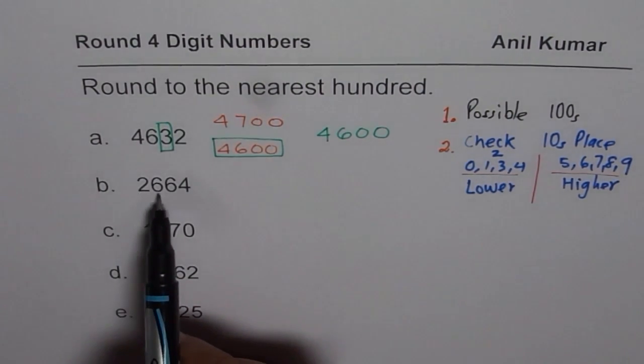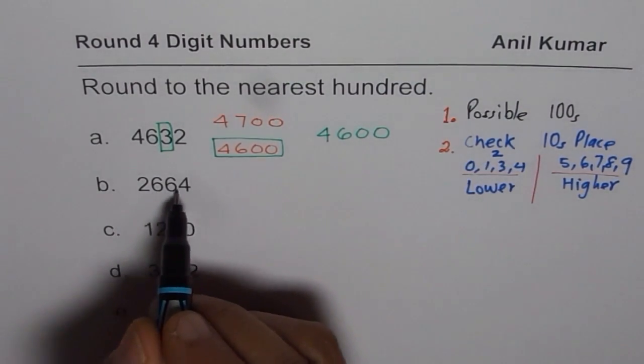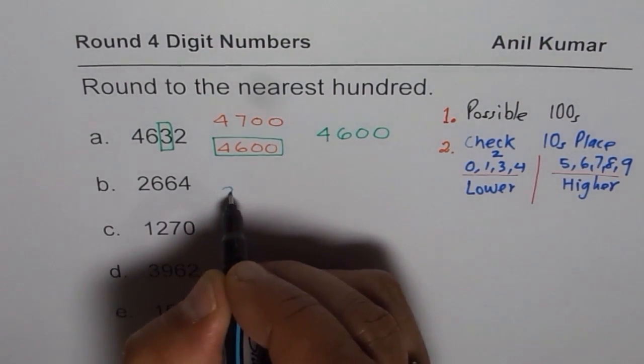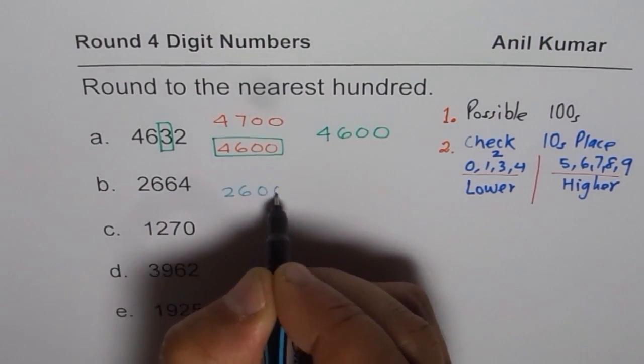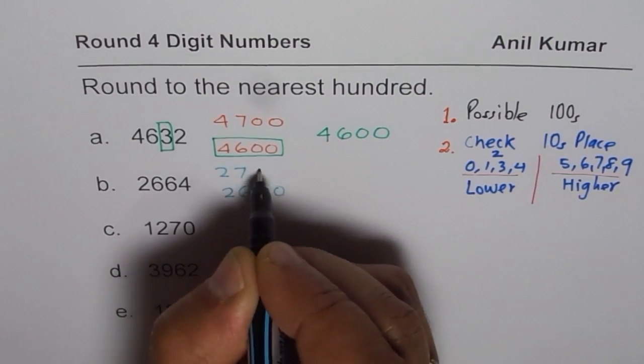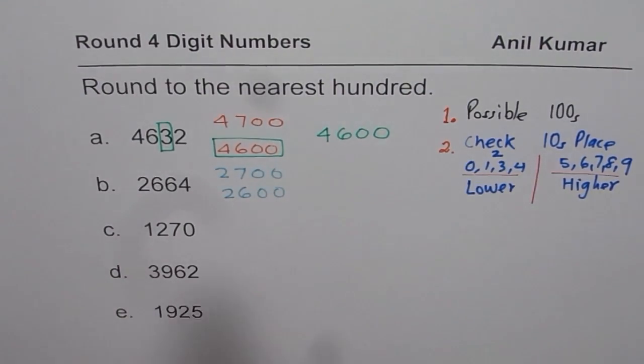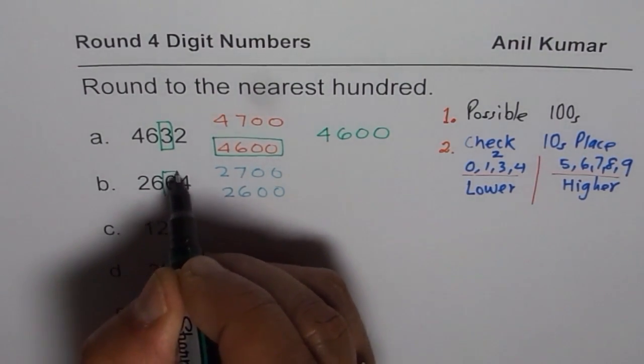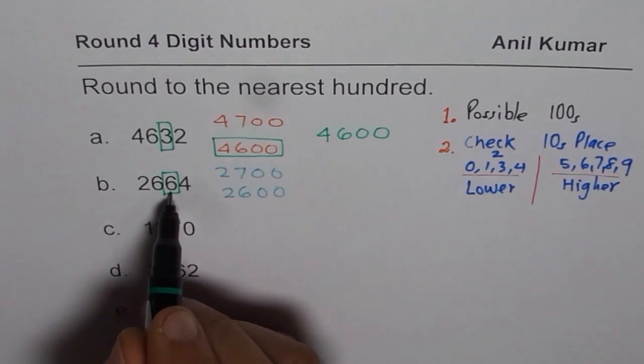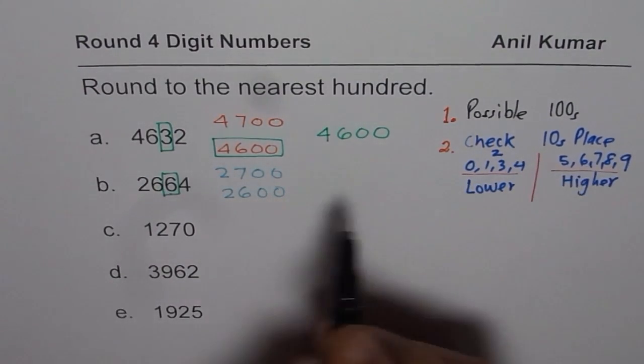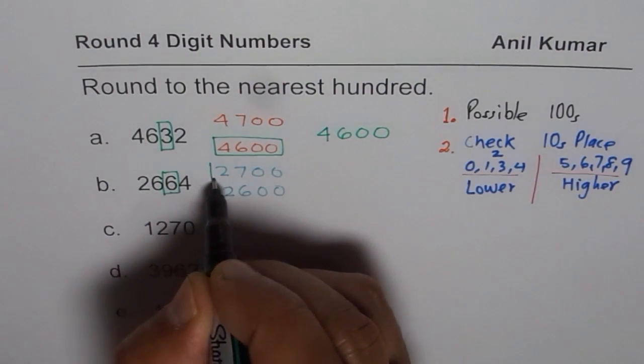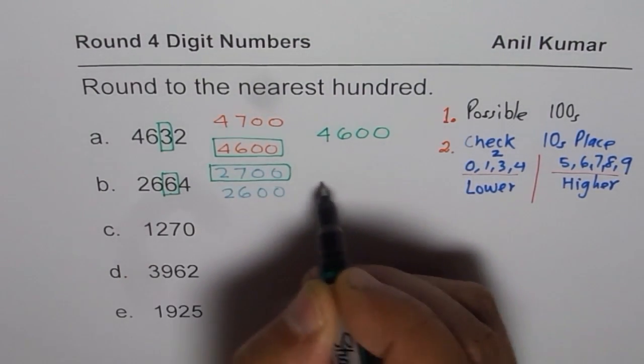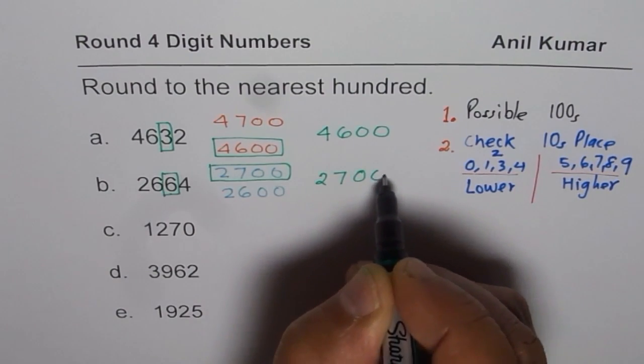2,664. 2,664 is between 2,600 and 2,700. Now when we select the tens number, it is 6. 6 is 5 or more, so we select the higher one. So it rounds to the higher number, which is 2,700.